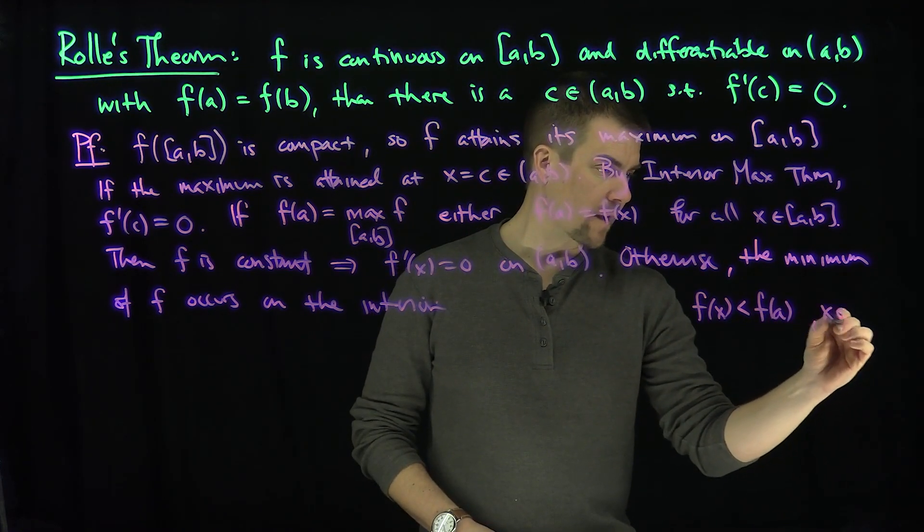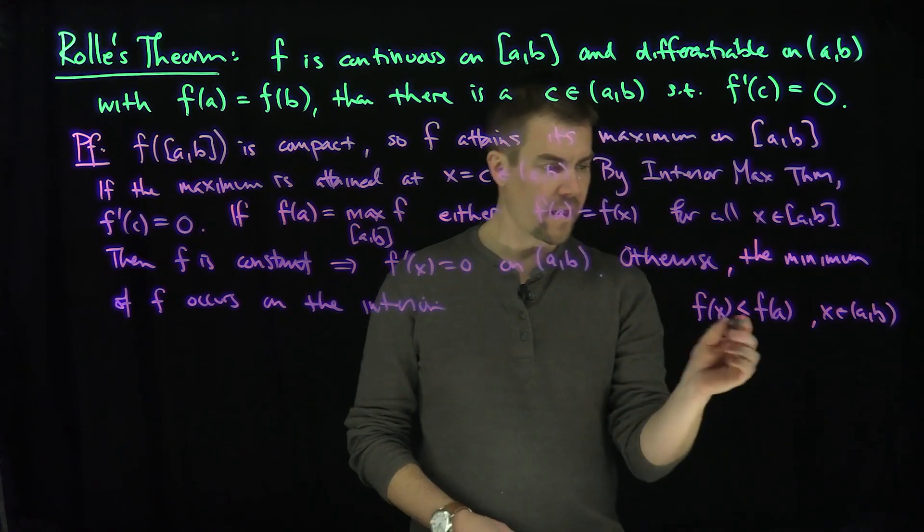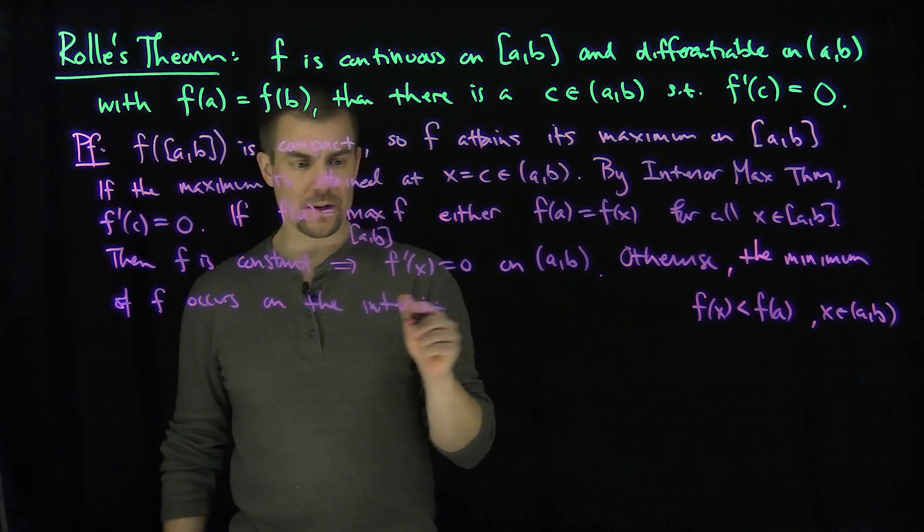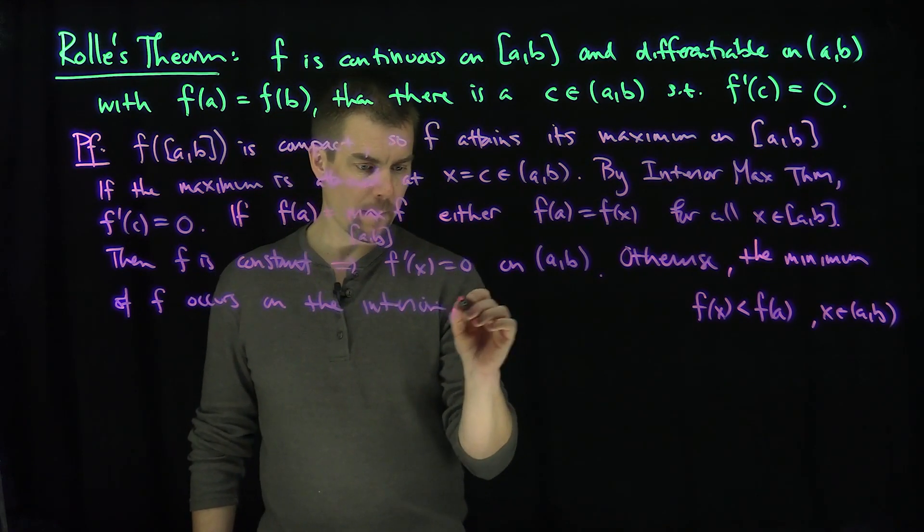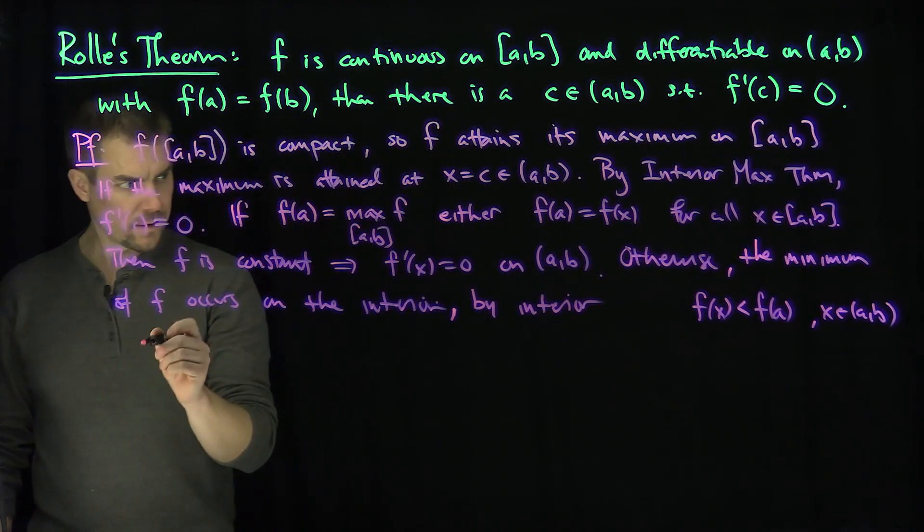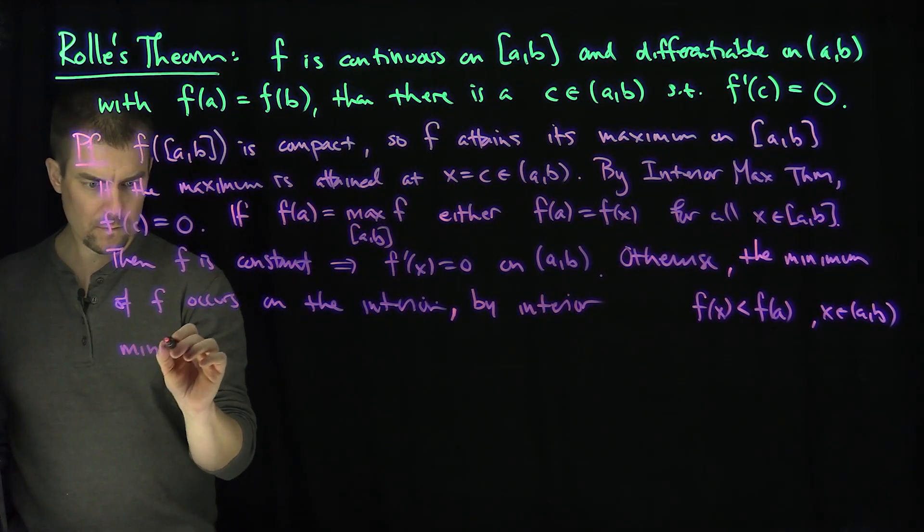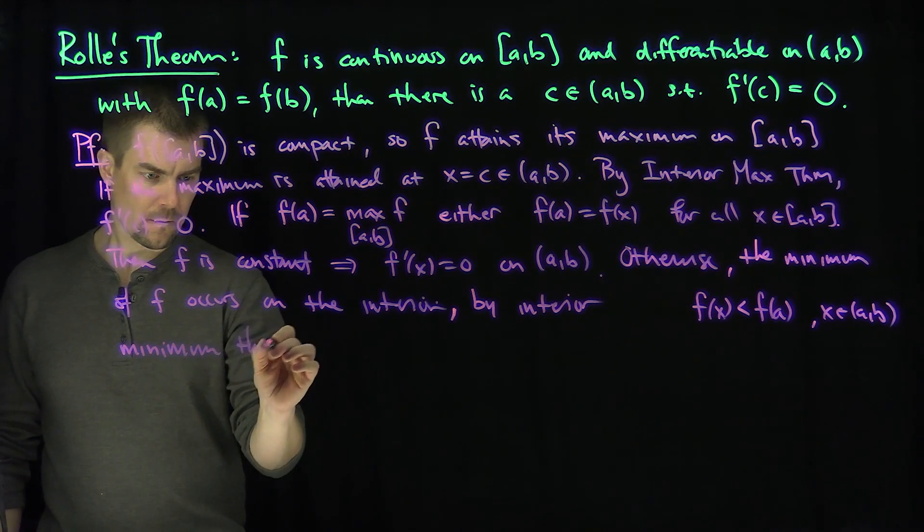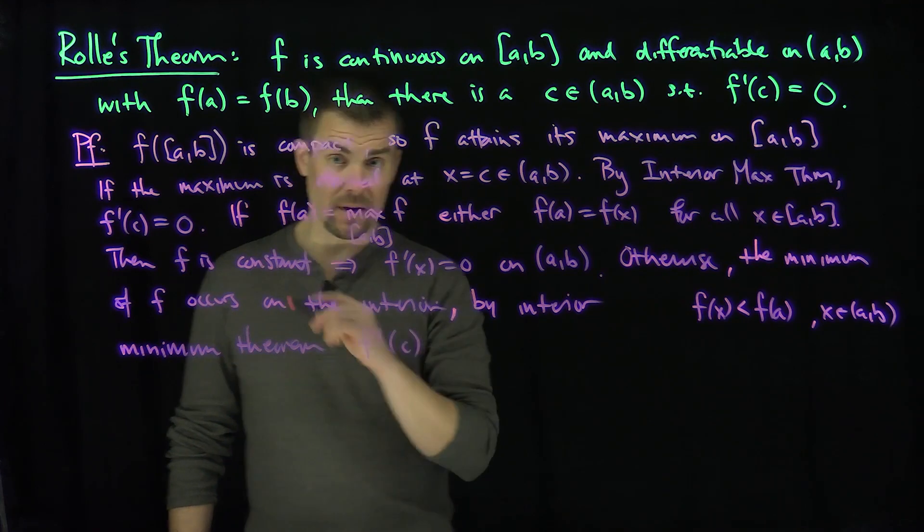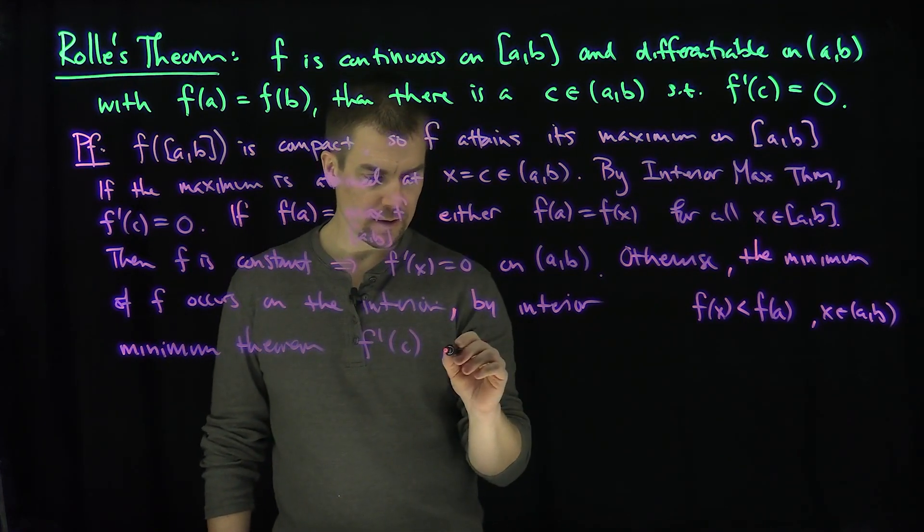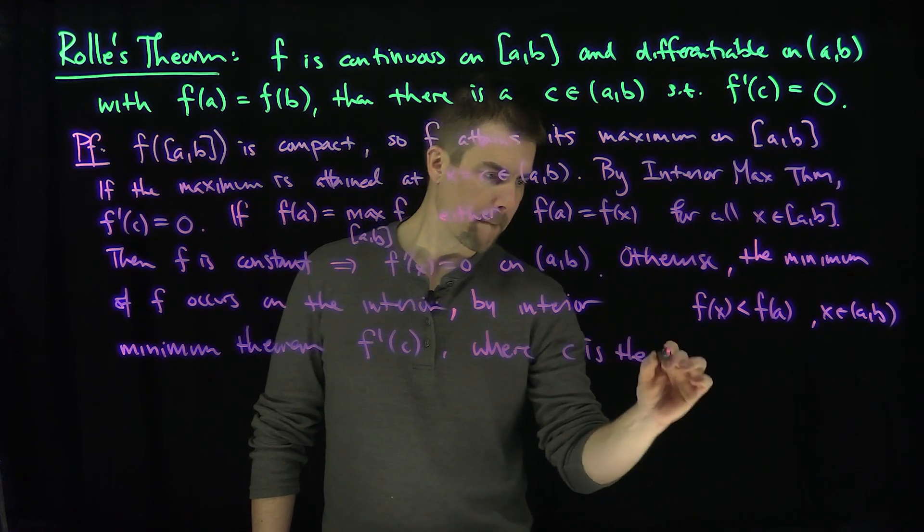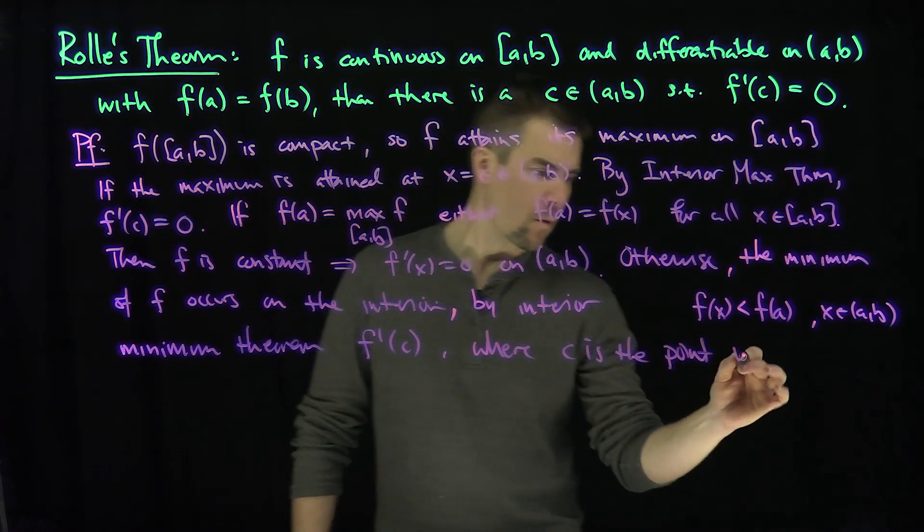And then we know that f also obtains its minimum, and so its minimum value by the same reasoning occurs at the interior. And so then by the interior minimum theorem, which is basically just the interior maximum theorem just reverted, f'(c) is equal to zero, where c is the point where the minimum is attained.